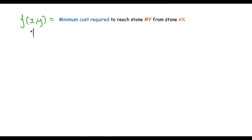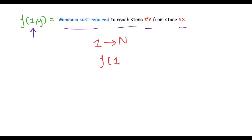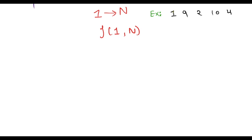Let's see how we can solve this problem. We assume there is a function f(x, y) that gives the minimum cost required to reach stone number y from stone number x. For our problem, the frog wants to reach the nth stone from the first stone, which means we want to find the value of f(1, n). Here, 1 denotes that the frog is currently at the first stone and wants to reach stone number n. For this example, n is 5, so we need the value of f(1, 5).